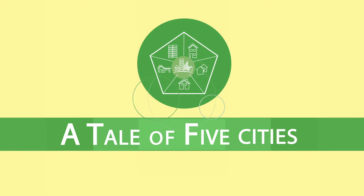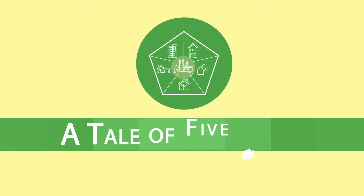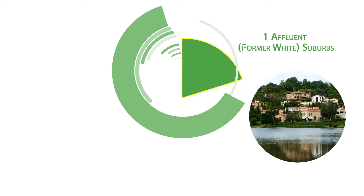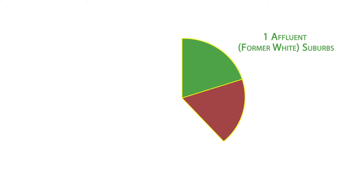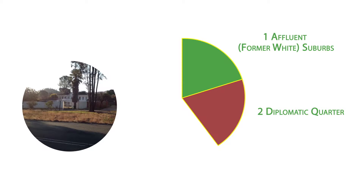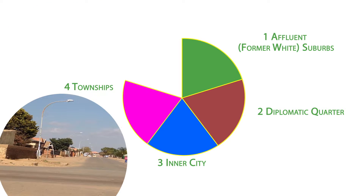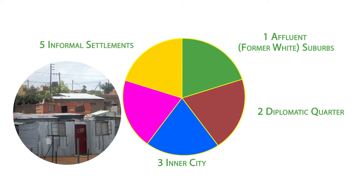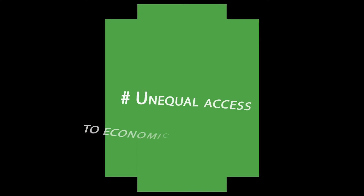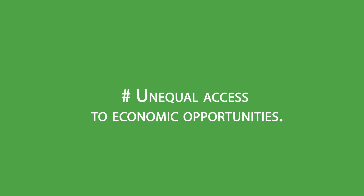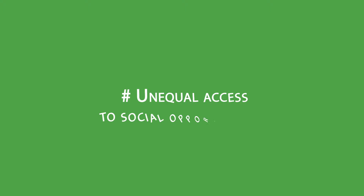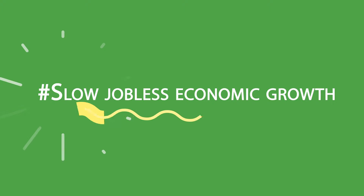Today, Tshwane is actually five cities in one. The first city is the affluent suburbs. The second is the diplomatic quarter. The third is the inner city. The fourth is the townships. And finally, we have the informal settlements. Residents have a totally different Tshwane experience depending on where they live. And if the city decides to take a principally follower leadership role, these five cities will stay with us way into the future.